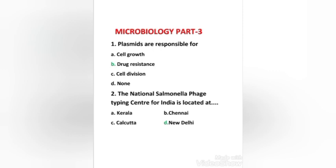Next question: the National Salmonella Phage Typing Center for India is located at — Kerala, Chennai, Calcutta, or New Delhi? The right answer is option D, New Delhi.